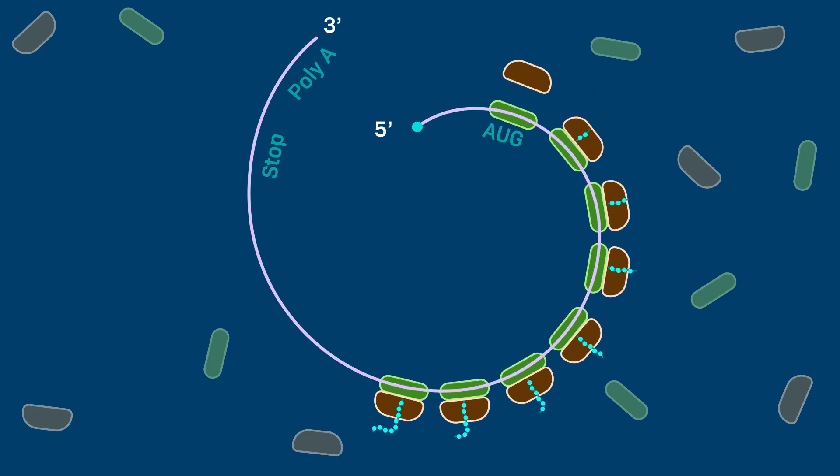New ribosomes attach to the 5' end as the previous ones move out of the way. All the ribosomes moving down the mRNA molecule move at the same rate.